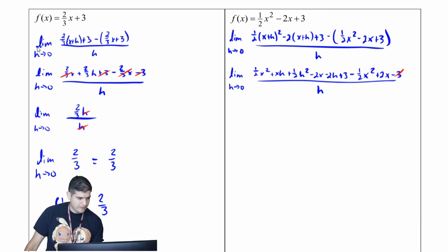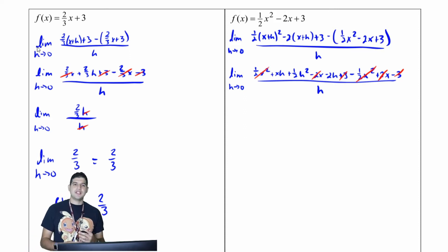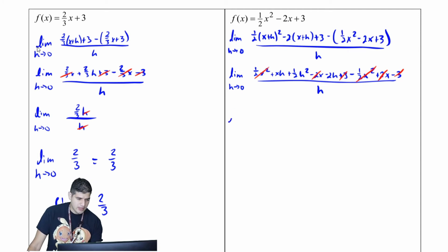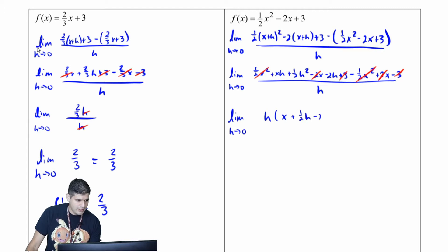Let's look at what's going to cancel out. I have negative three and positive three. I have two x and negative two x. I have negative one-half x squared and positive one-half x squared. I notice that h is in common with all terms in the numerator, so I'll factor that out. So I have the limit as h approaches zero of h times x plus one-half h minus two, all over h.